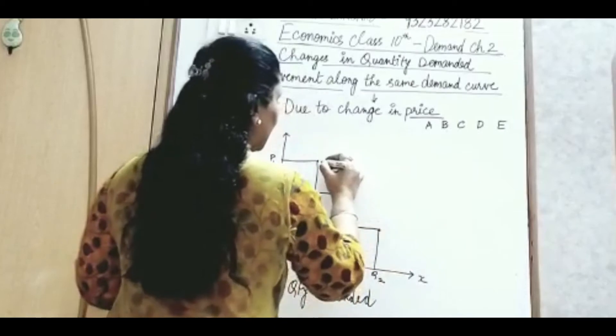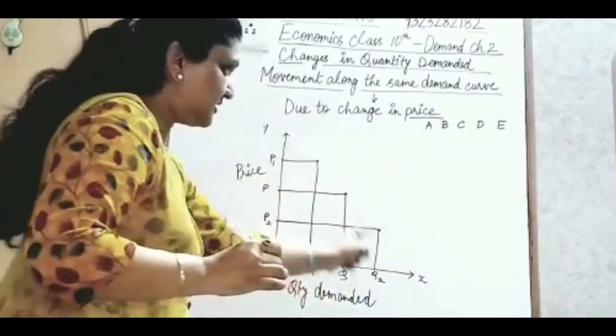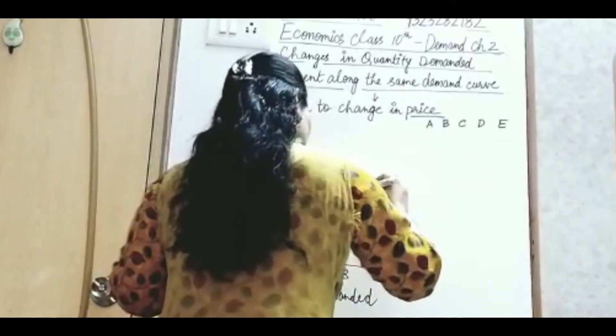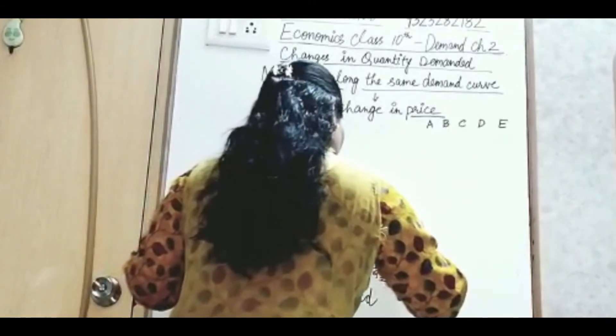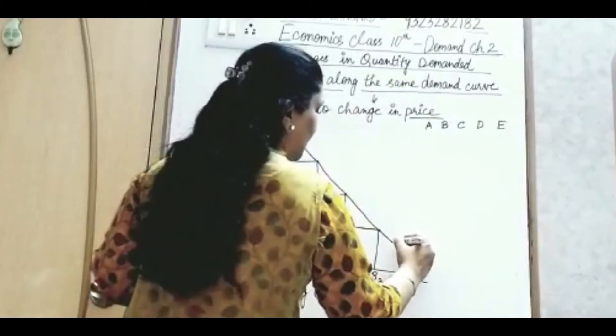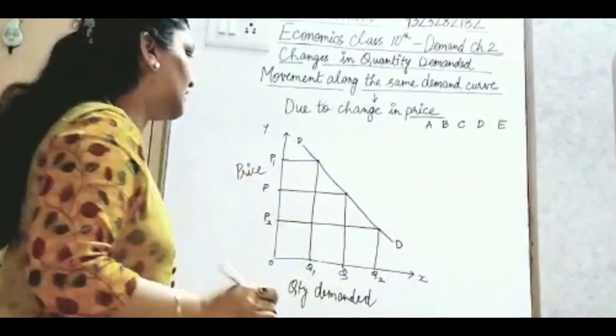So I have got these three points. Now if I join these three points, I will get the demand curve. The DD demand curve, downward sloping demand curve.